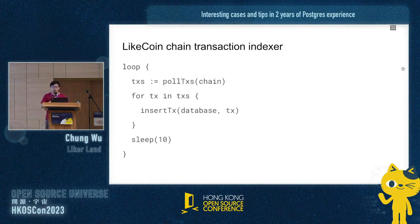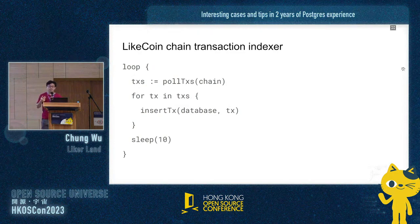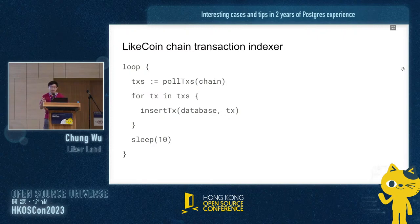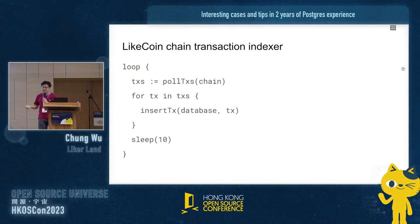The Litecoin chain transaction indexer is conceptually very simple. For every 10 seconds, it just gets new transactions from the blockchain, and then for each transaction, it just puts them into the Postgres database. As simple as that.